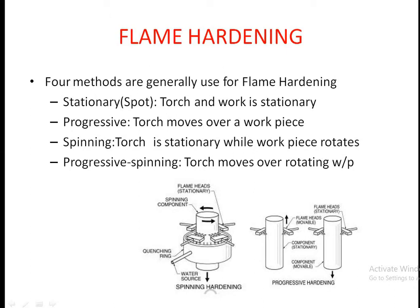There are four methods generally employed for flame hardening. First, stationary or spot: both torch and work piece are stationary. Second, progressive: the work piece is stationary and the torch moves over it. Third, spinning: the torch is stationary while the work piece rotates, used for larger parts to ensure even heating. Fourth, progressive and spinning: a combination where both the torch moves and the work piece rotates.